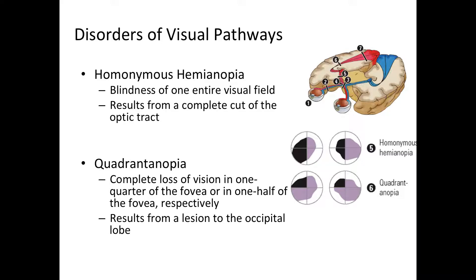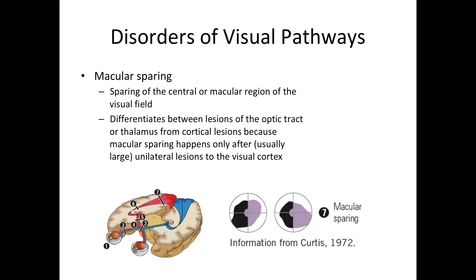Last is quadrantanopia, which is technically similar to hemianopia but affects only a quadrant — you lose vision of a quarter of your visual field or a quadrant of your fovea. This often results from a smaller lesion to the occipital lobe. And there is also macular sparing — sparing of the central visual field — which you can see in the diagram.